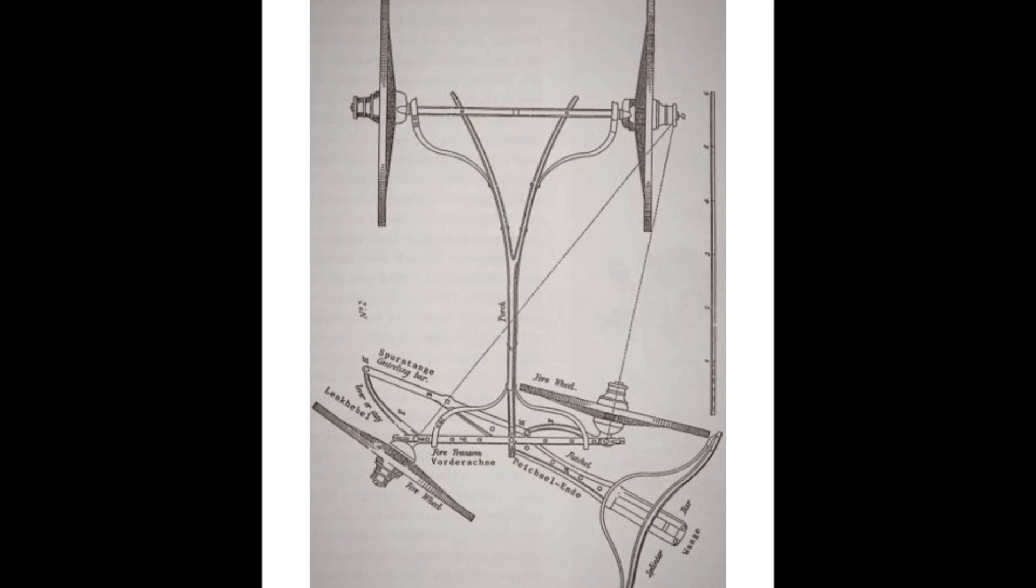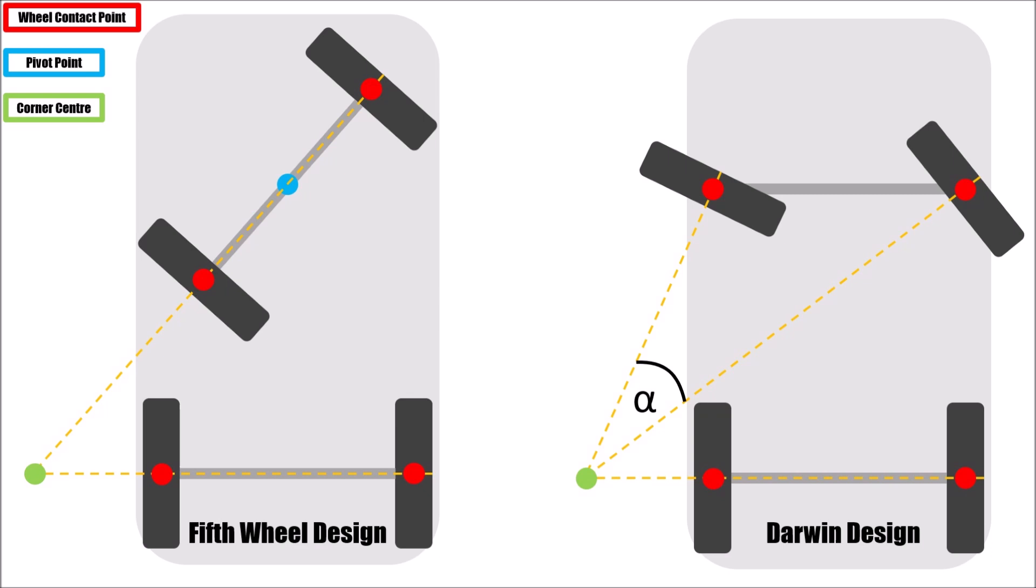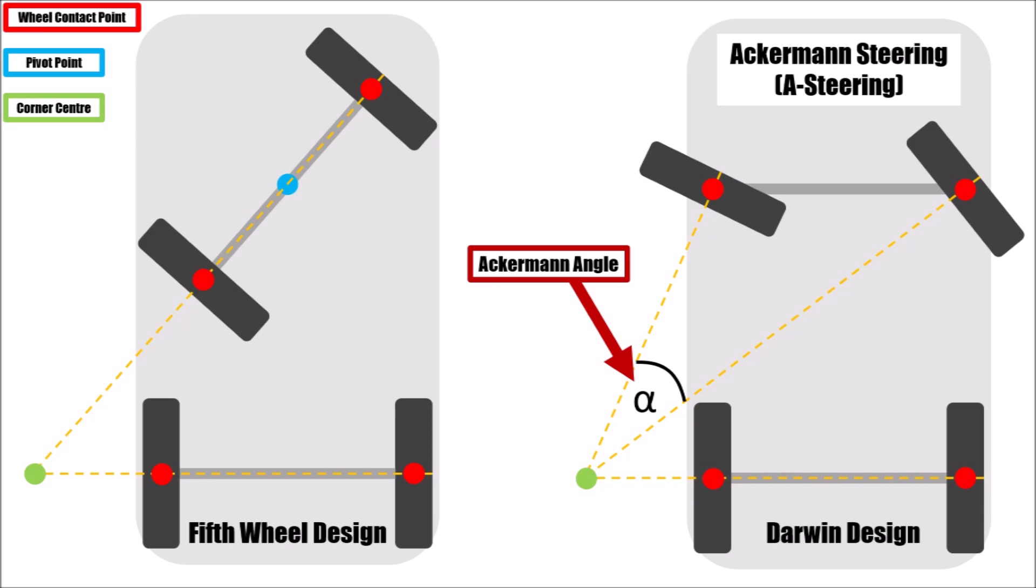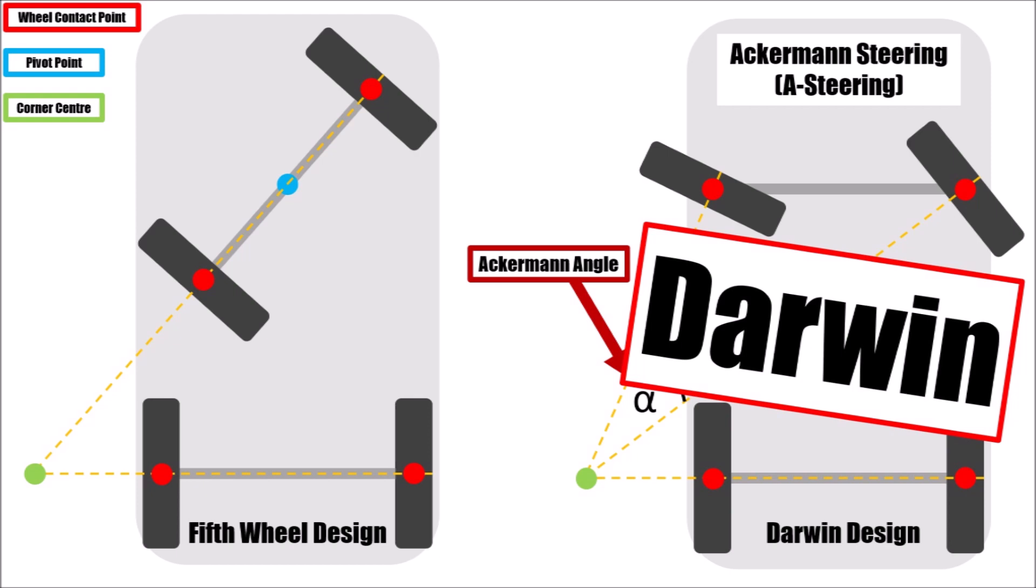He filed the application together with Lankensberger in 1817 and they received the patent in 1818. Because Ackermann was the sponsor, the steering was now called Ackermann steering or A-steering. And today, there is a so-called Ackermann angle and suspension design. This angle is the angle difference between the two front wheels.